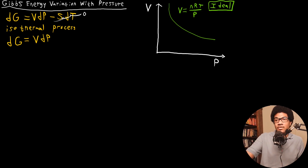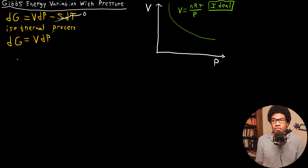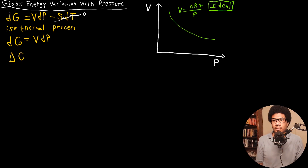The Gibbs free energy is going to be only dependent on pressure, and at this point we haven't assumed anything about our gas. This is true for any isothermal process — the Gibbs free energy is a function of pressure alone. So if we want to solve for the change in Gibbs free energy, we have to integrate both sides, which means we'll end up with ΔG being equal to the integral of VdP.